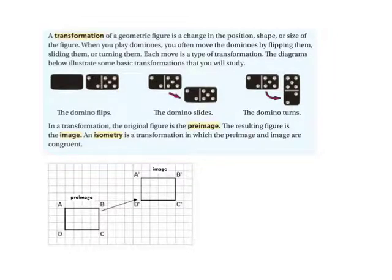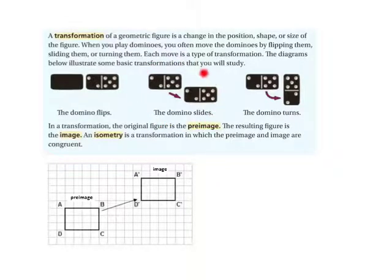The diagram below illustrates some basic transformations you will study. Here, the domino is flipped, or reflected. In this picture, the domino is slid, or translated. In this picture, the domino turns, or is rotated.